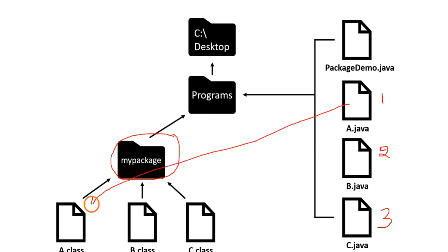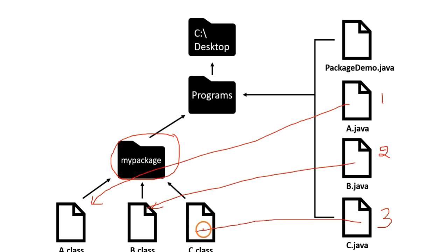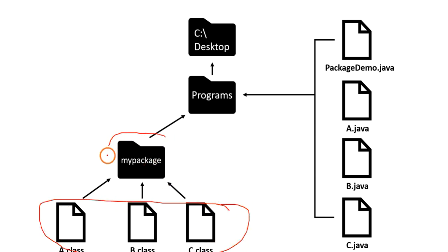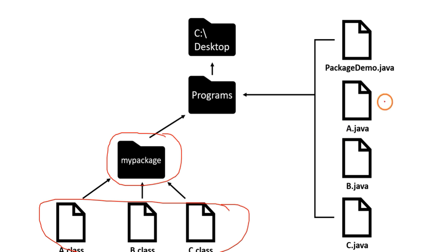After creating these files and compiling them, A.java will create A.class, B.java will create B.class, and C.java will create C.class. All the class files will then be placed in the package called mypackage.